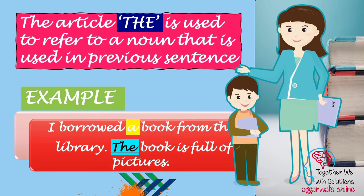Article 'the' is used to refer to a noun that was used in a previous sentence. For example: 'I borrowed a book from the library' — here 'a book' refers to any general book. But in the second sentence, 'The book is full of pictures' — I used article 'the' because I am talking about the specific book mentioned in the first sentence. The noun is being used for the second time, so I use 'the book'. So: 'I borrowed a book from the library. The book is full of pictures.'